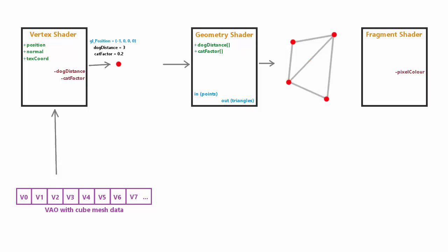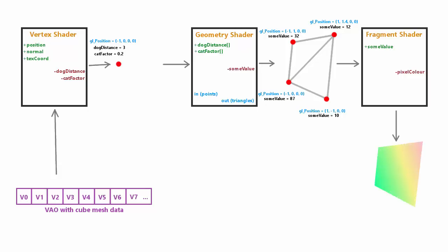When generating new vertices in the geometry shader, we can give them per-vertex values — a colour, a brightness value, a distance, or anything else — just like in the vertex shader. We also have to set the inbuilt gl_Position variable for each vertex. After that, the fragment shader does its usual thing with the generated primitives. Importantly, the outputs of the vertex shader are now the inputs of the geometry shader, and the outputs of the geometry shader are the inputs to the fragment shader, so the vertex and fragment shaders no longer interact directly.